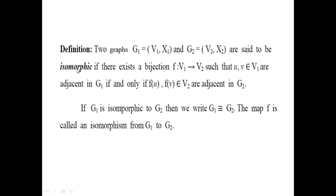Let's see today graph isomorphism. Two graphs G1 and G2 are said to be isomorphic if there exists a bijection f from V1 to V2 such that uv belongs to V1 or are adjacent in graph G1 if and only if f(u), f(v) belongs to V2 or are adjacent in graph G2. If it is so, then we can say that G1 is isomorphic to G2.